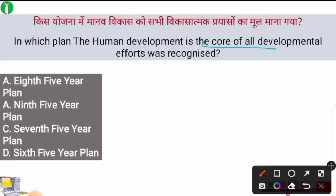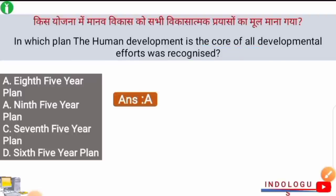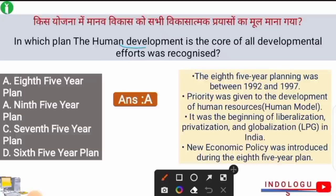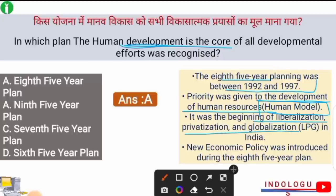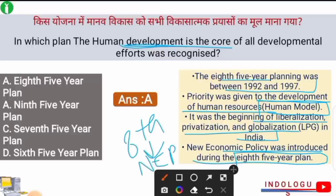Next question: In which plan was human development recognized as the core of all developmental efforts? The right answer is option A — the Eighth Five Year Plan. Its important concept was that human development is the reason behind all other developmental efforts. The Eighth Five Year Plan ran from 1992 to 1997, and priority was given to human resource development, so it is also called the Human Model. It marked the beginning of liberalization, privatization, and globalization — the LPG policy — and the New Economic Policy was introduced during this plan.